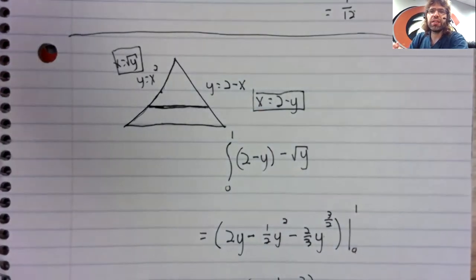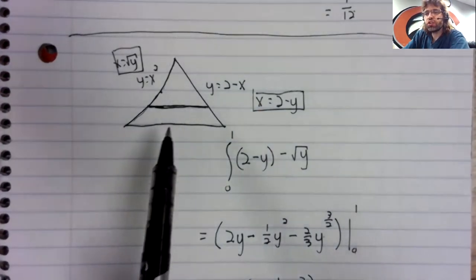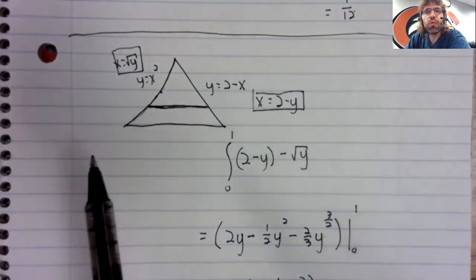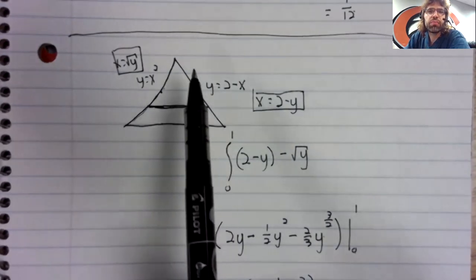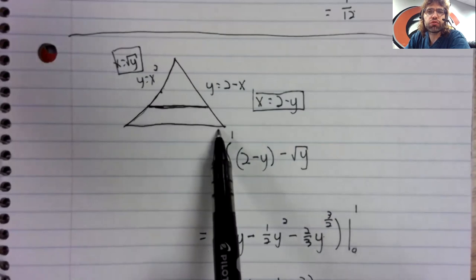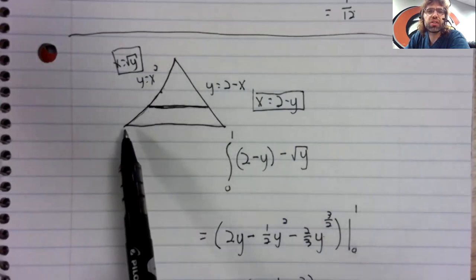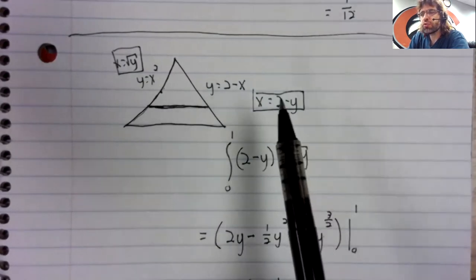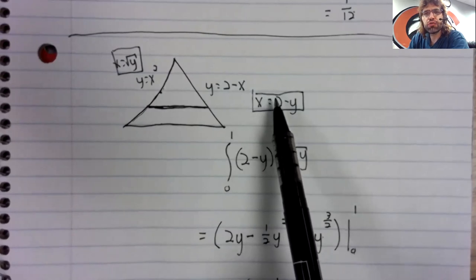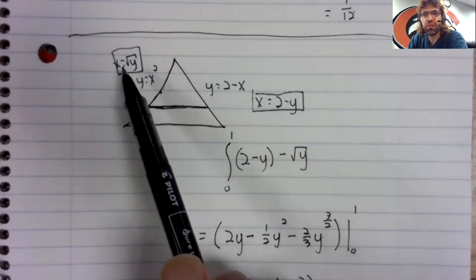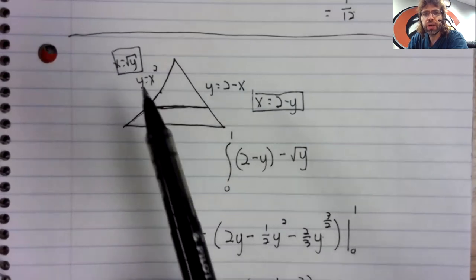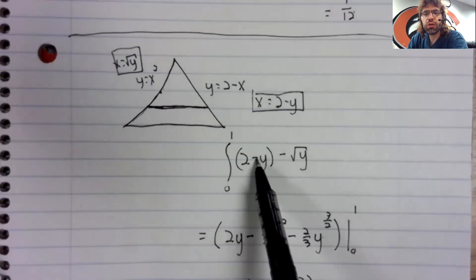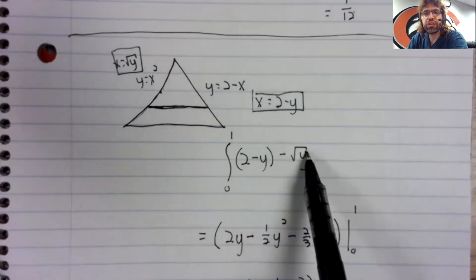What's probably easier is to integrate with respect to y, because this x is always the right curve, this is always the left curve. You don't have that switch. To do that, you do have to rewrite both of these equations in terms of y.